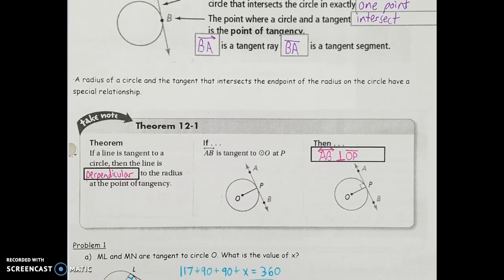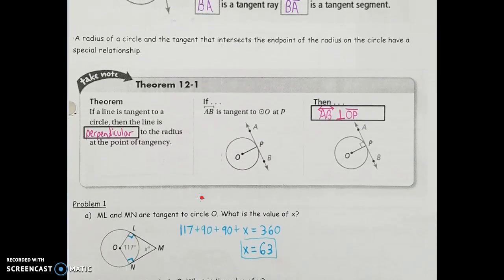For example number one, ML and MN are tangent to circle O. We want to find the value of X. ML is tangent at L and MN is tangent at N, so by our theorem, we have right angles at both of those points. We're also given 117 degrees for the other angle. For a four-sided figure, all angles add up to 360. So 117 plus 90 plus 90 plus X equals 360, giving us 63 degrees for X.